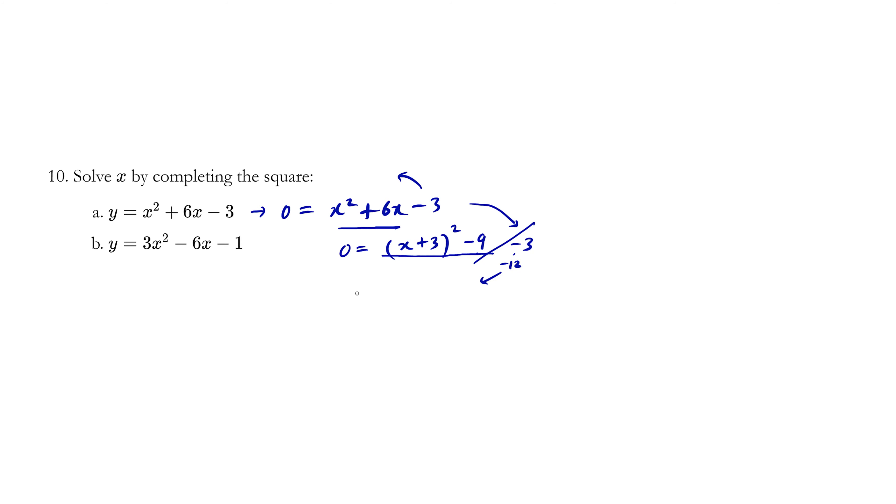This happens to be minus 9 minus 3 is minus 12. So minus 12, we throw it over, it becomes 12. 12 is equals to x plus 3 squared.